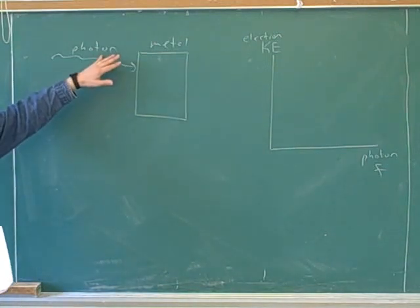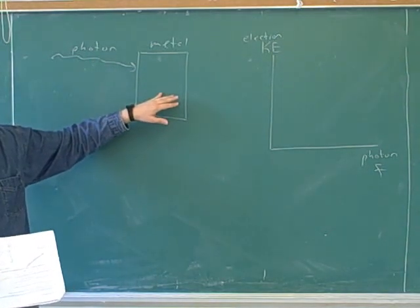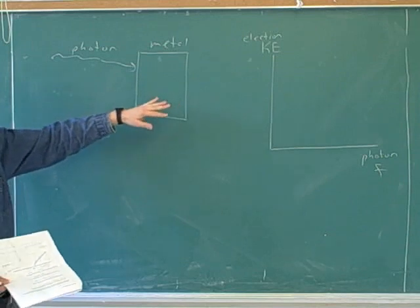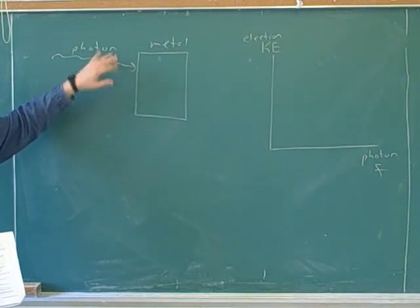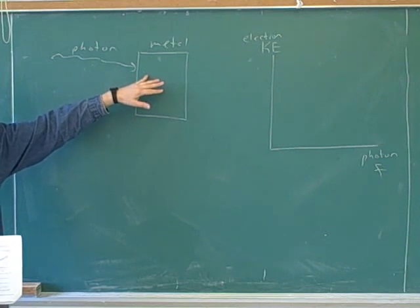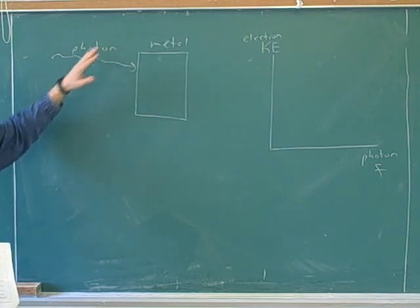So the photon is bringing in energy. If it has enough energy, it will be able to strip an electron away from the metal, which means ionizing the metal, and then the electron will go shooting away. However, if the photon doesn't have enough energy, it will just do nothing. It won't be able to strip away the electron. If the frequency is very low, then the energy is very low, and it can't strip away an electron.